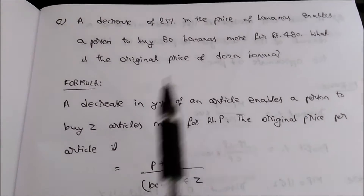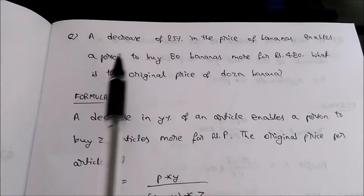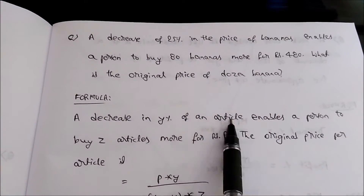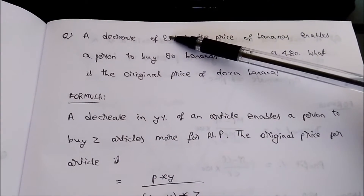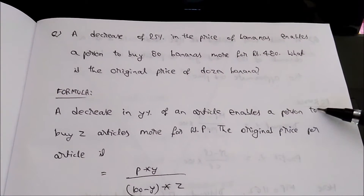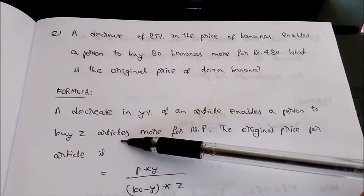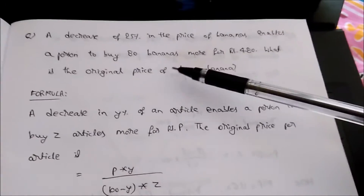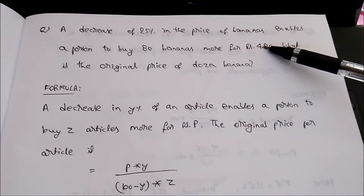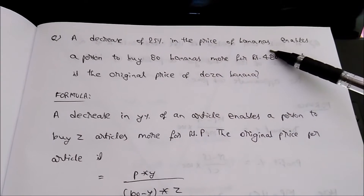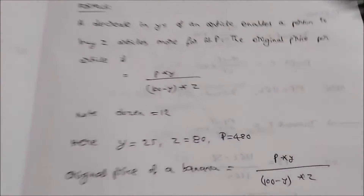Now compare this formula with the question. A decrease of 25% in the price — so the y value is 25. Enables a person to buy 80 more bananas — so z equals 80. For rupees 480 — so p equals 480. Now we have the values of y, z, and p.